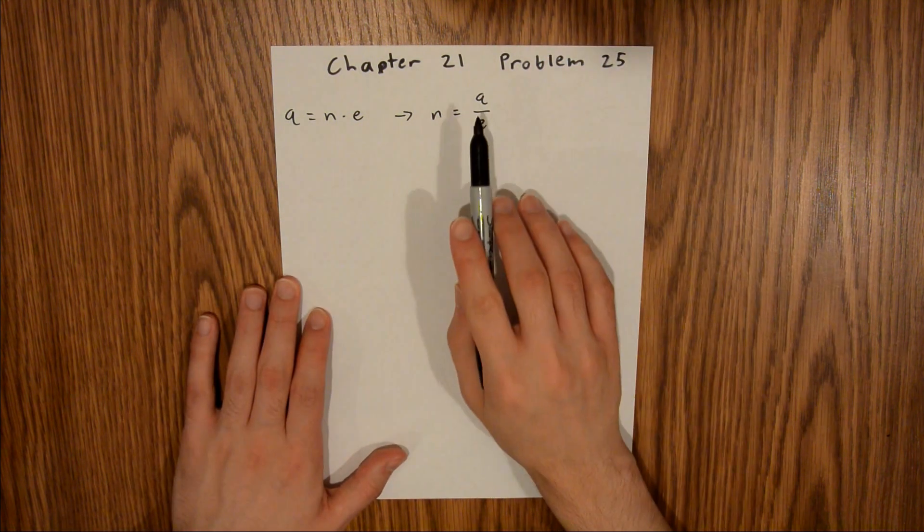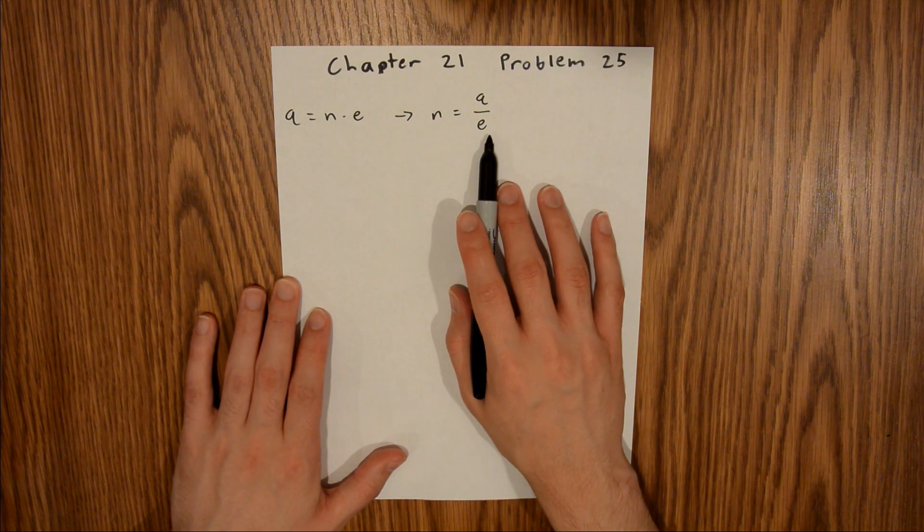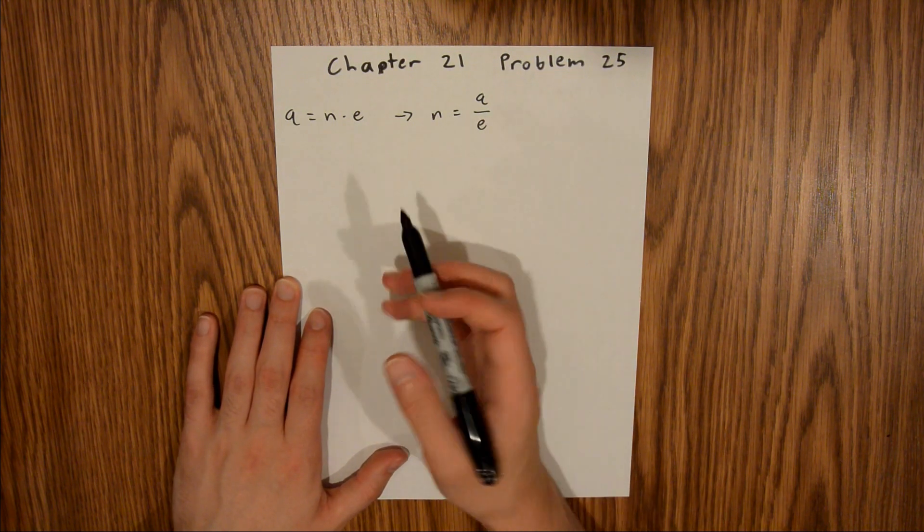In the problem, we are given the total charge, and the charge of an electron is a universal constant, so we have everything we need to solve this problem.